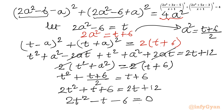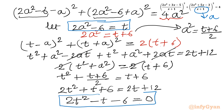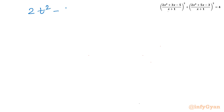Remember our substitutions: at the beginning x + 1 = a, and also 2a² - 6 = t. We will use both substitutions after solving this quadratic. The equation to solve is 2t² - t - 6 = 0.